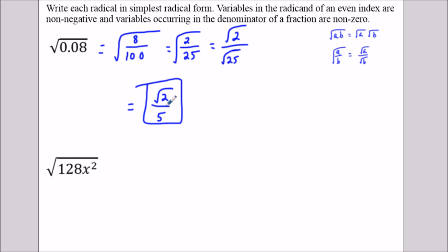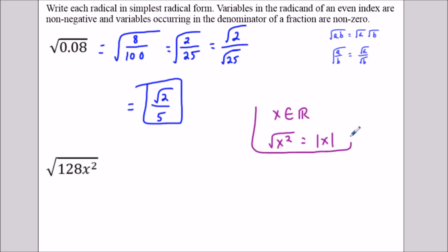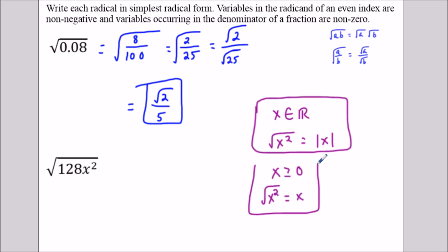For the next question, we have to make use of one of the most common traps in math. If x is any real number — meaning x is any number you could think of except imaginary numbers — then the square root of x squared is equal to absolute value of x. A lot of people just say x, but if x is any real number, then the square root of x squared is absolute value x. However, if x is non-negative, meaning x is greater than or equal to 0, then the square root of x squared is just equal to x.